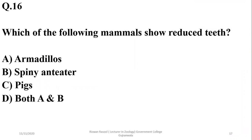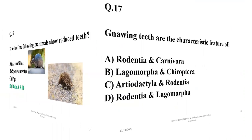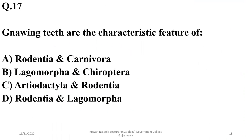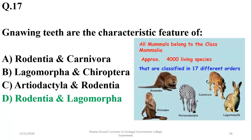Question 16: Which of the following mammals show reduced teeth? Reduced teeth are found in armadillos as well as spiny anteaters. The right option is D. Question 17: Nine teeth are a characteristic feature of Rodentia as well as Lagomorpha — rodents include shrews and Lagomorpha includes rabbits. The right option is D.